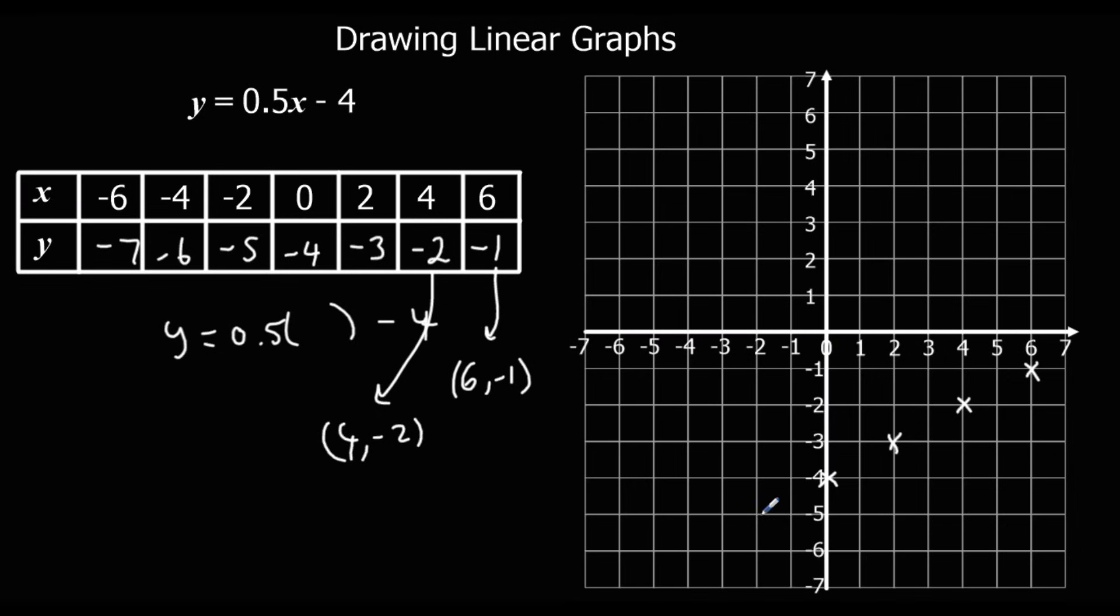Minus 2 minus 5. Minus 4 minus 6. And minus 6 minus 7. And that's to draw another straight line. So through all the points. And it's formed another straight line. So we know it's done it right.